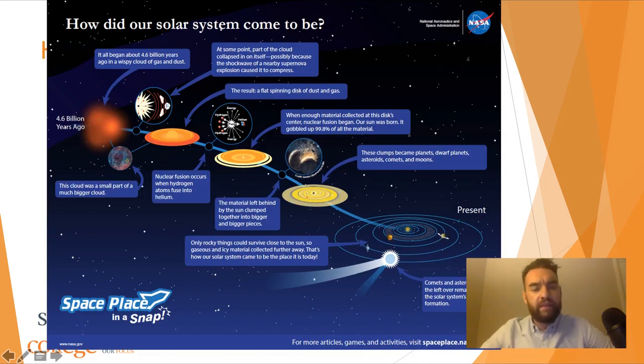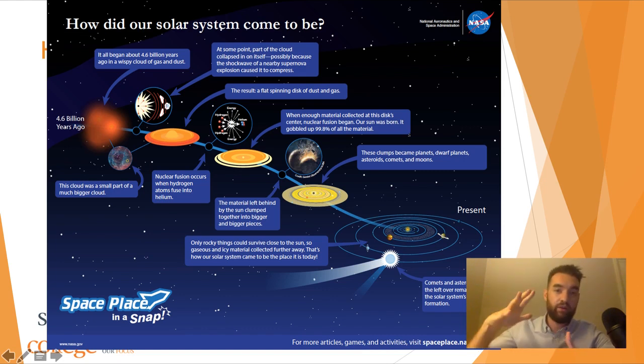I'm going to talk you through this little timeline that's from NASA. 4.6 billion years ago was when our solar system began to form. It began in a wispy cloud of gas and dust, which is probably the supernova remnant that I mentioned. At some point, part of the cloud collapsed in itself. We think the cloud collapsed because there was perhaps another supernova explosion nearby. The result of this compression was a flat spinning disk of dust and gas.